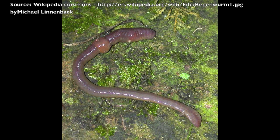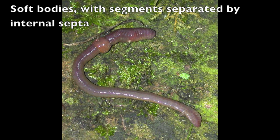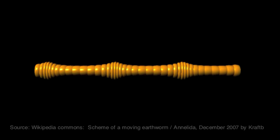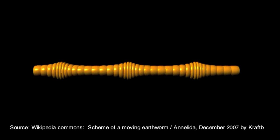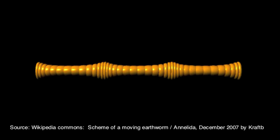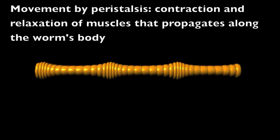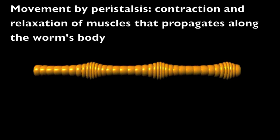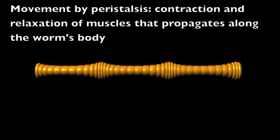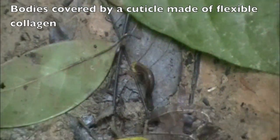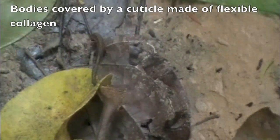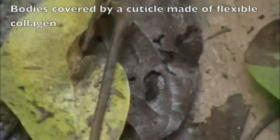Annelids are soft-bodied, segmented worms where each of the segments is separated by an internal septum. They move by a process known as peristalsis, which involves the contraction and relaxation of muscles that propagates along the worm's body. Their bodies are also covered by a cuticle made of flexible collagen.